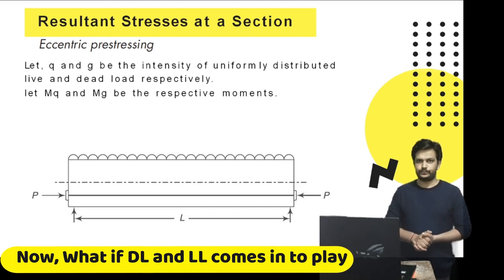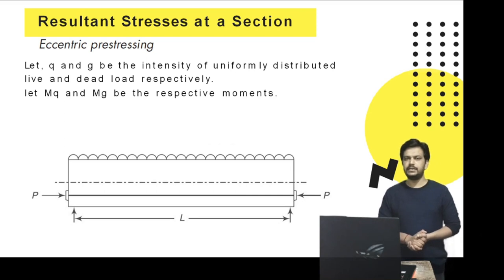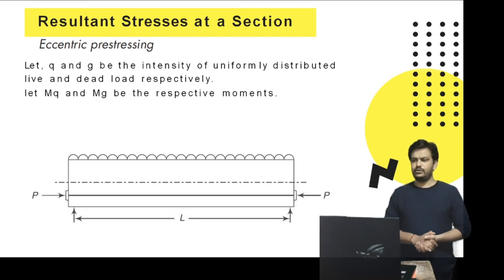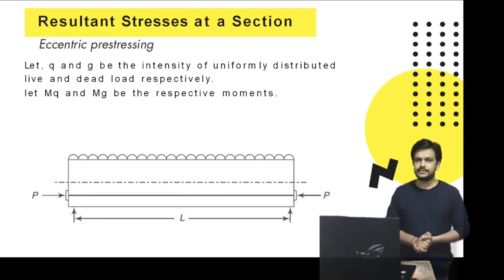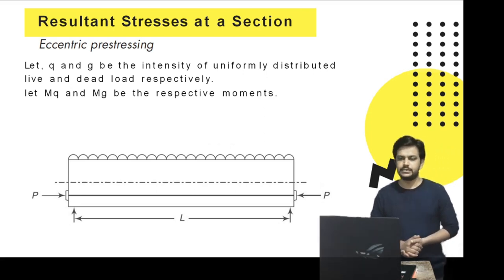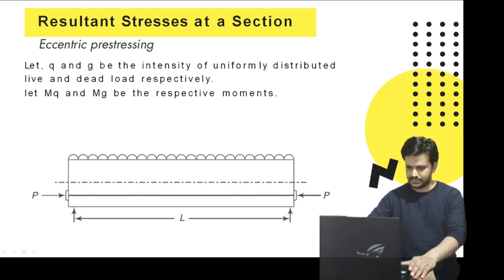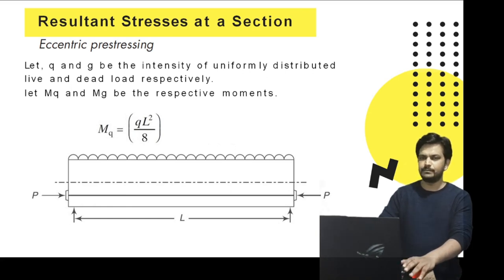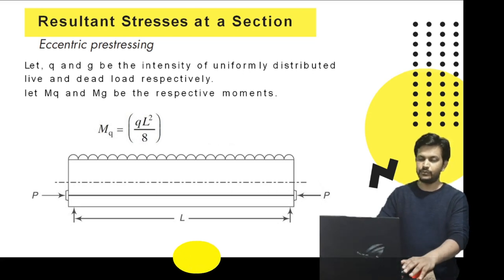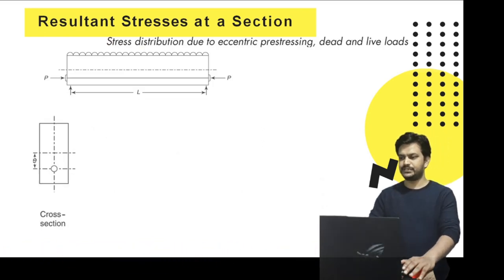Now, what if the member is also subjected to live load and dead load? Let small q be the intensity of live load and small g be the intensity of dead load, both uniformly distributed over the span. Let Mq and Mg represent the moments corresponding to live load and dead load respectively. Since the beam is simply supported, Mq equals qL²/8 and Mg equals gL²/8.